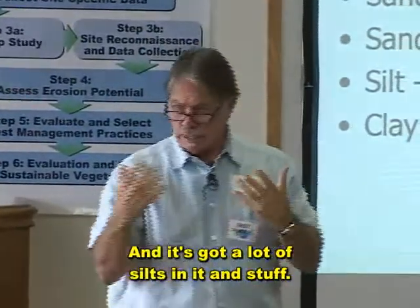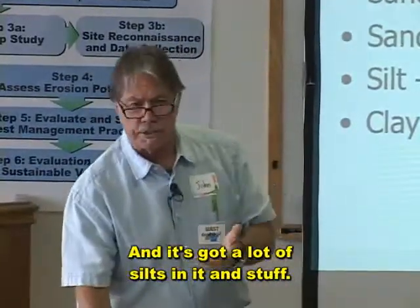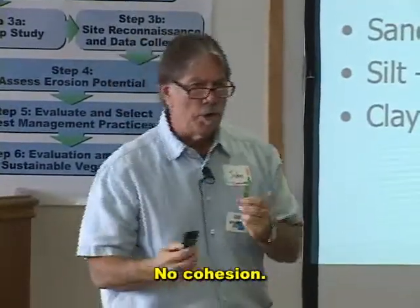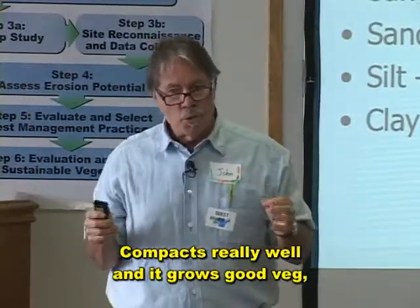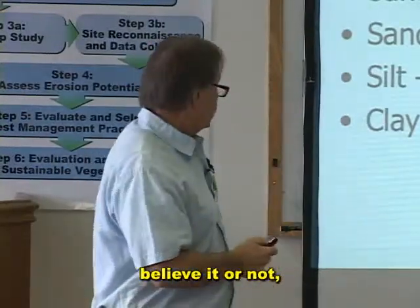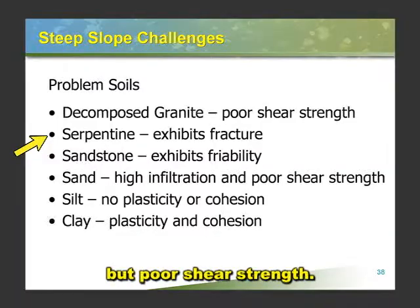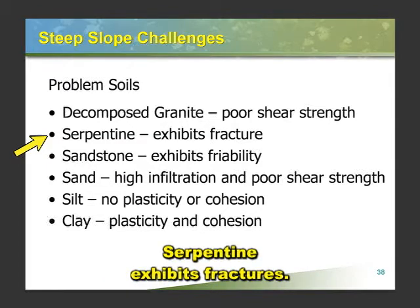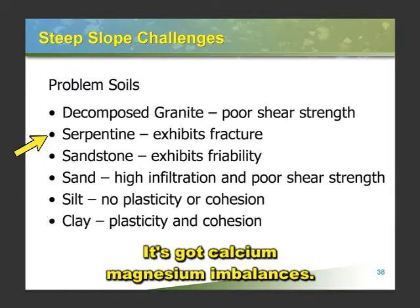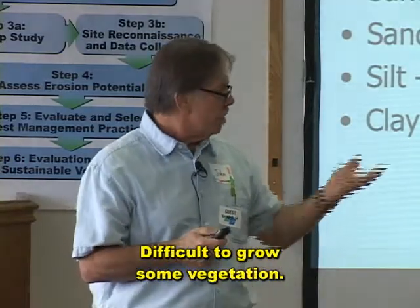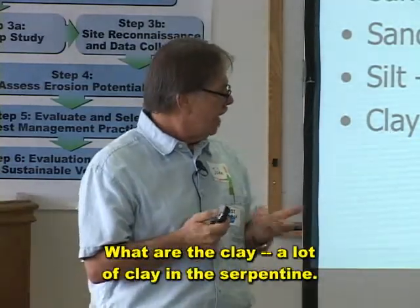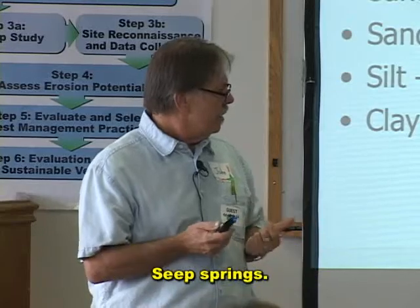It's got a lot of silts in it, no cohesion, compacts really well, and it grows good vegetation believe it or not, but poor shear strength. Serpentine exhibits fractures, it's got calcium-magnesium imbalances, difficult to grow some vegetation. What are the — a lot of clay in the serpentine? Seep springs.